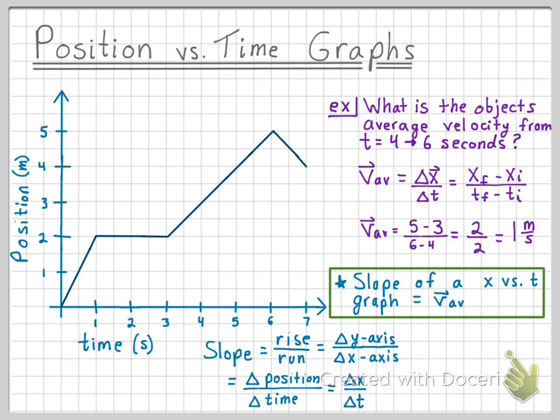Now we're left with the equation delta x over delta t, which may look familiar, and it is actually the average velocity equation.